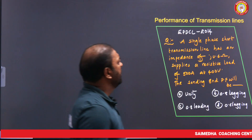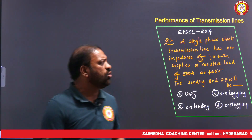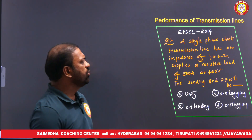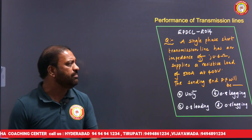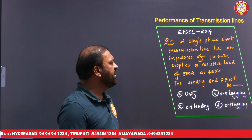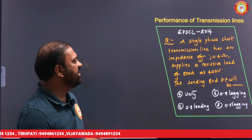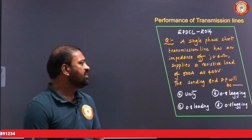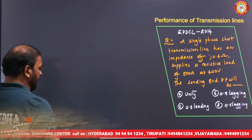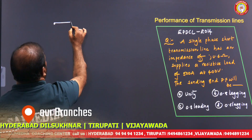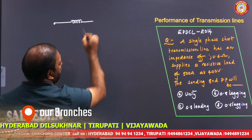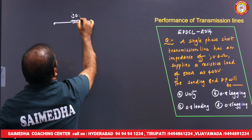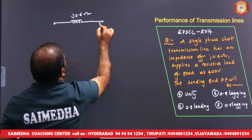This next question was asked in APDCL 2014. A single-phase short transmission line has an impedance of j0.6 ohms and supplies a resistive load of 500 amperes at 400 volts. We need to find the sending end power factor.